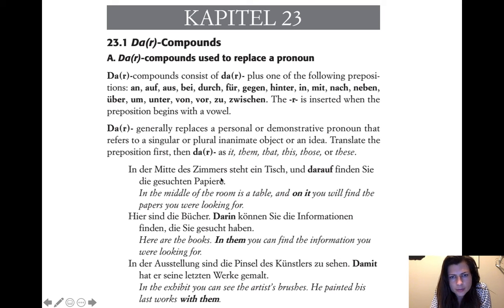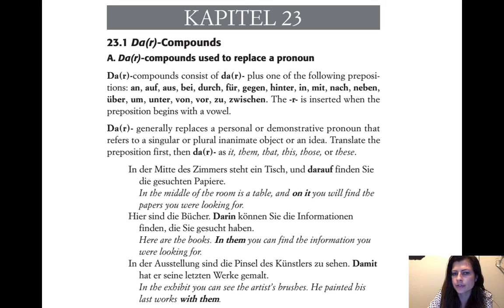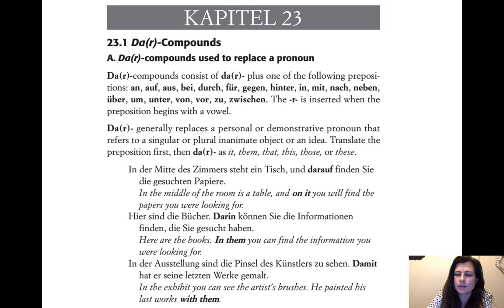'In der Mitte des Zimmers steht ein Tisch. Und darauf finden sie die gesuchten Papiere.' In the middle of the room there is a table, and on it they find the papers they were looking for. So instead of saying 'auf dem Tisch' (on the table) or 'auf ihm' — which would suggest 'on top of him' as a person — since it refers to the inanimate table, we say 'darauf,' meaning 'on it,' referring back to the table.